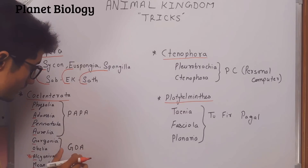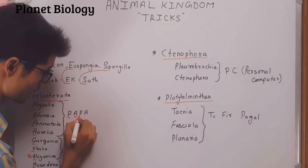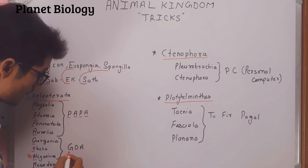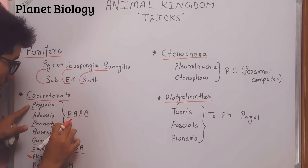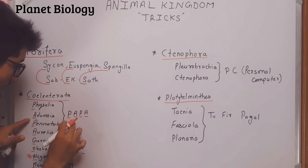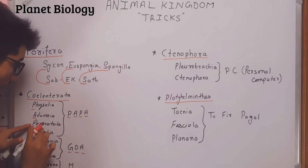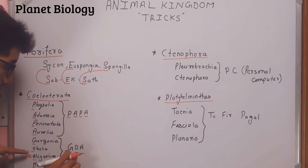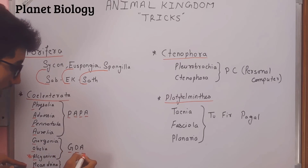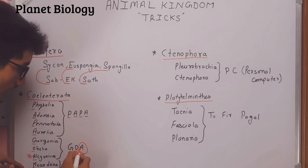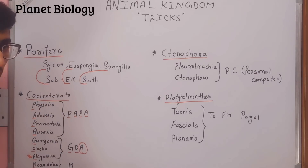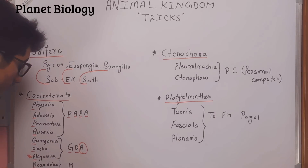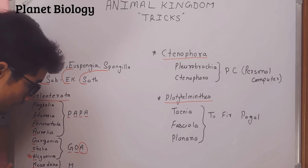This is the trick — it's like 'Papa Goa May'. P for Physalia, A for Adamsia, again P for Aurelia, A for Eudora, G for Gorgonia, O for Obelia, and the last example at a higher level — L for Leucosolenia, and the last one is Meandrina. So remember: Papa, Goa, May.